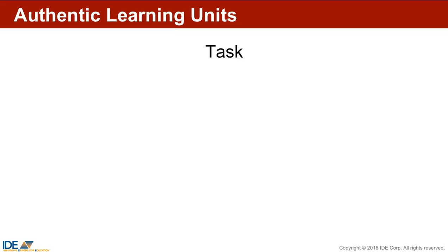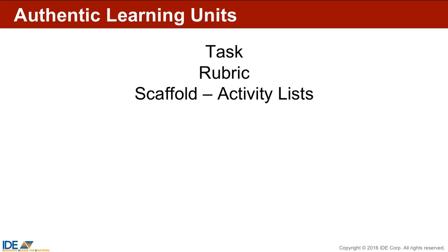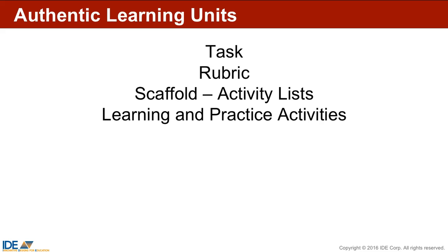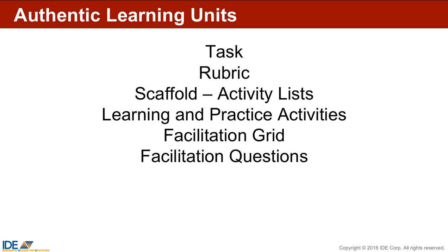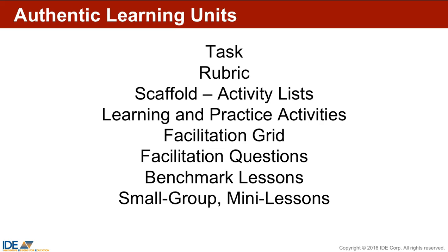Just to give you an overview of the big picture: you'll create a rubric to provide your students with clearly articulated expectations. You'll brainstorm a set of rich and diverse opportunities for students to learn, and from that, you'll develop activity lists to guide your students — usually through a day or more at the elementary level and a week or more at the secondary level. You'll identify or develop learning activities for direct instruction and practice. You'll design a facilitation grid for formative assessment and facilitation questions to probe student thinking. You'll think through lessons for the whole class focusing on concepts, and lessons for small groups of students who need the same level of skill instruction.